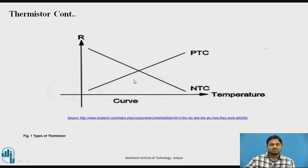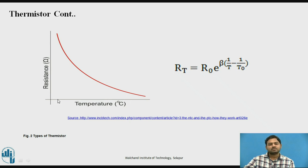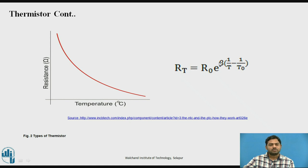These two types of characteristics — PTC and NTC — show the ideal linear relation between resistance and temperature. But in practice, an exponential relationship is often observed. In the exponential relationship, resistance is exponentially related to temperature, as shown in the equation: Rt = R0 * e^(beta * (1/T - 1/T0)), where Rt is the resistance at that temperature, R0 is the resistance at 0°C, and beta depends on the material used in the thermistor.